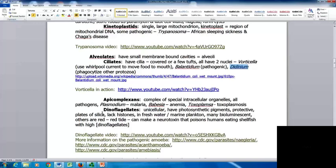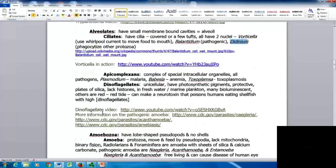Dinoflagellates are unicellular with photosynthetic pigments and protective plates of silica. They lack histones and are found in freshwater and marine plankton. Many are bioluminescent, others are red. For example, red tide is a dinoflagellate that makes a neurotoxin poisoning humans who eat shellfish with high concentrations of dinoflagellates. Here's a couple more videos and links if you're interested.